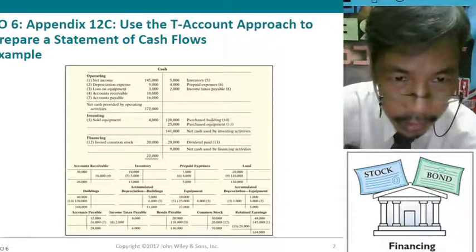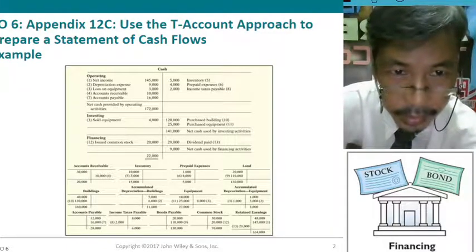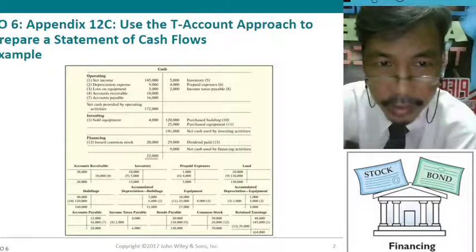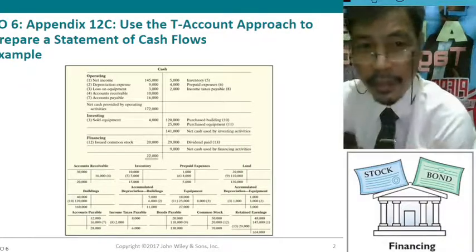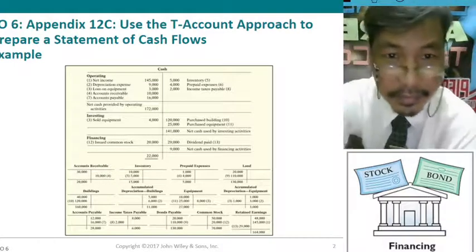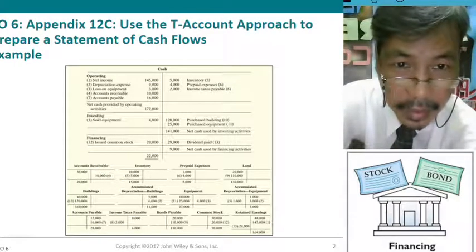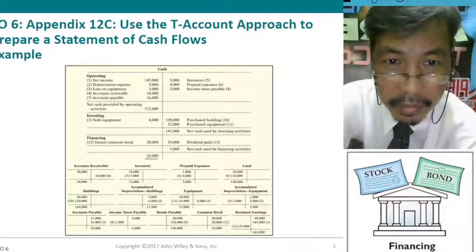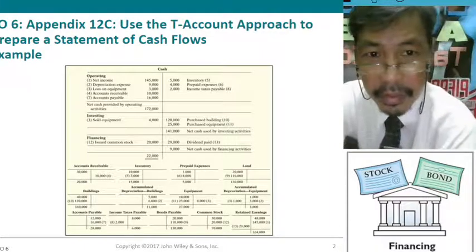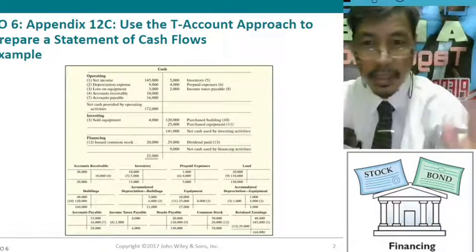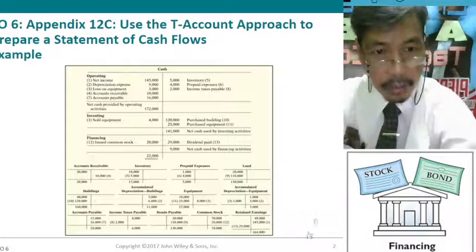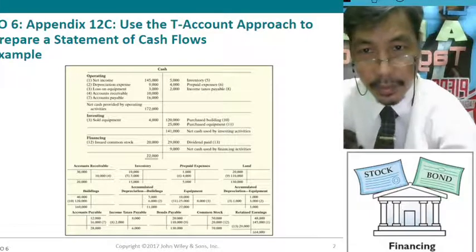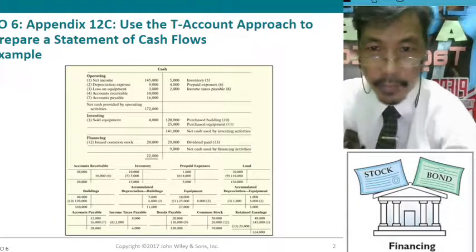We have all the information here: inventory, prepaid expenses, income tax payable — these are on our indirect method. Accounts receivable, cost payable, and net income are all on the operating side of the statement of cash flow.